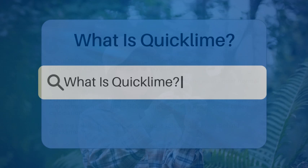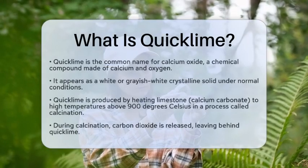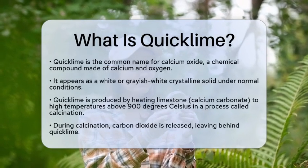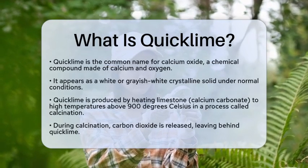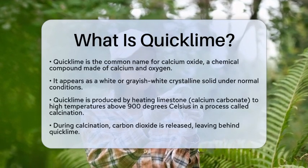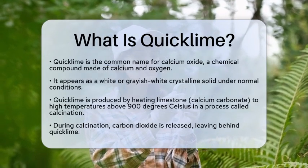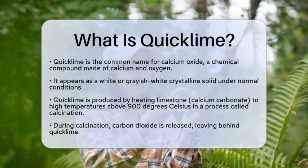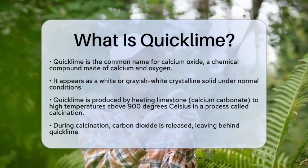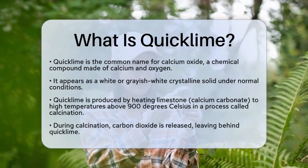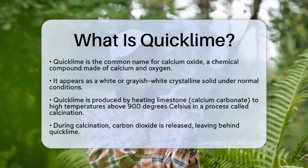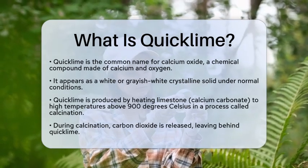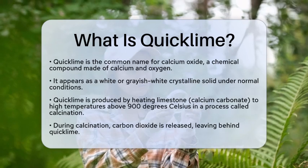What is QuickLime? Have you ever wondered about the white powder that plays a vital role in construction and industry? That substance is known as QuickLime — the common name for calcium oxide, a chemical compound with the formula CaO. Under normal conditions, it appears as a white or grayish-white crystalline solid. This material is produced by heating limestone, which is calcium carbonate, to high temperatures, typically above 900 degrees Celsius. This process is called calcination.